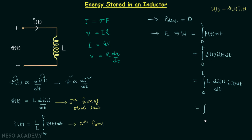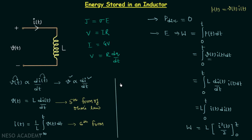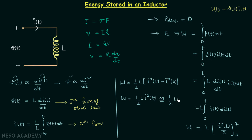Since L is a constant, we take it out of the integral. We then have the integration of I(t) with respect to I(t), giving I²(t)/2, evaluated from the lower limit zero to the upper limit t. From here we get work = (1/2)·L·[I²(t) − I²(0)]. Finally, we get work = (1/2)·L·I²(t), or simply work = (1/2)·L·I², since I is understood to be a function of time t.